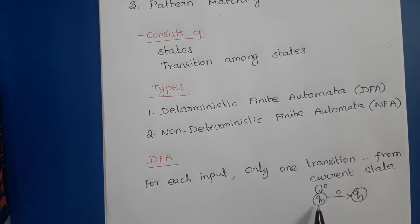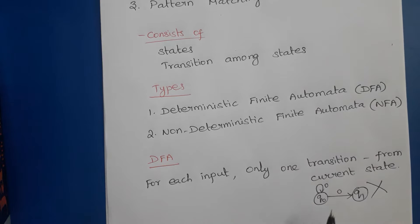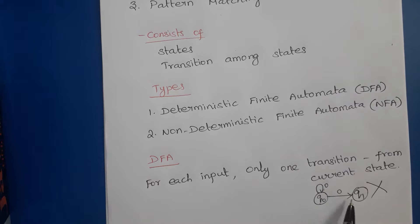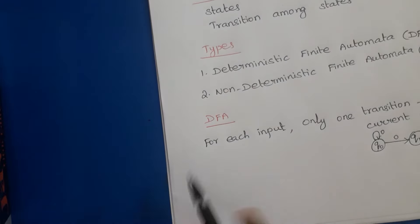In DFA, from state q0, having 0 go to both q0 and q1 is not possible — this is wrong. For each input symbol, only one transition is possible from the current state. This is possible in non-deterministic finite automata, but in deterministic finite automata the next state is uniquely determined. We can formally represent a DFA as follows.